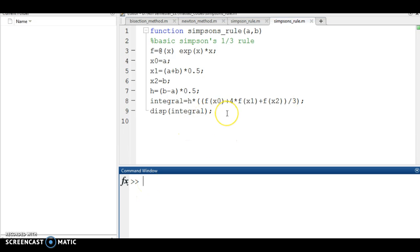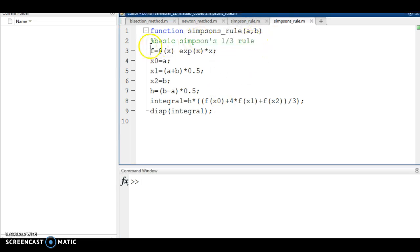The error for the Simpson's 1/3 rule is of the order h raised to 4, where h is nothing but b minus a by 2, because here Simpson's 1/3 rule is being implemented. Hence h is b minus a by 2 and order of the error is h raised to 4.